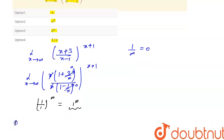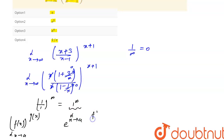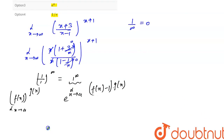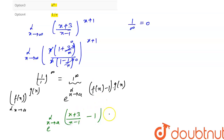We know that if we have f(x) to the power g(x), limit x tends to a, then it can be written as e to the power limit x tends to a of (f(x) − 1) · g(x). So from here we can write this as e to the power limit x tends to a of (x+3)/(x−1) − 1, multiplied by (x+1).